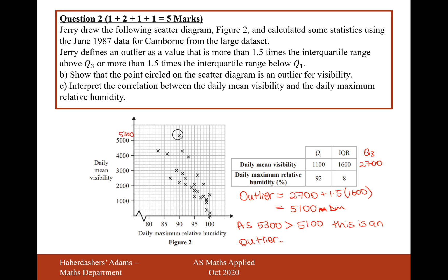So part C is interpret the correlation between the daily mean visibility and the daily maximum relative humidity. Well, I'll just write, I'll just say it out loud here. It's going to be a negative correlation, but that's not the only answer here. The interpretation is going to be as daily maximum relative humidity increases, daily mean visibility decreases. And there you are, that's your answer. As daily maximum relative humidity increases, daily mean visibility decreases. And that's negative correlation.